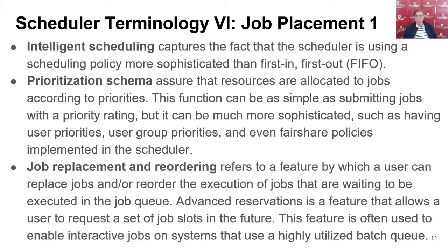Here we have more terminology on schedulers for job placement. The most trivial scheduling is first in, first out — you order jobs by the way they were submitted. Then there's prioritization, which means you can raise the priority of certain resources, disks, and networking. It could even reflect the amount of money a person is paying. There are extreme examples in clouds where Amazon offers cheap prices for people willing to run jobs that can be tossed aside if somebody more important comes along and pays more money.